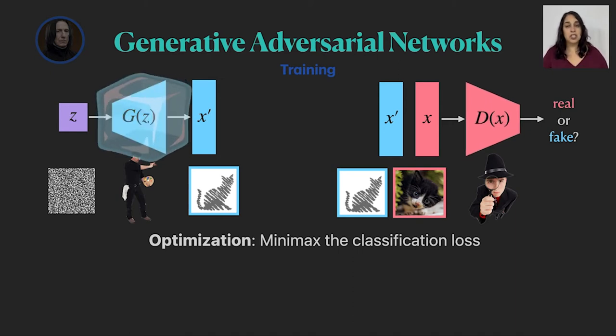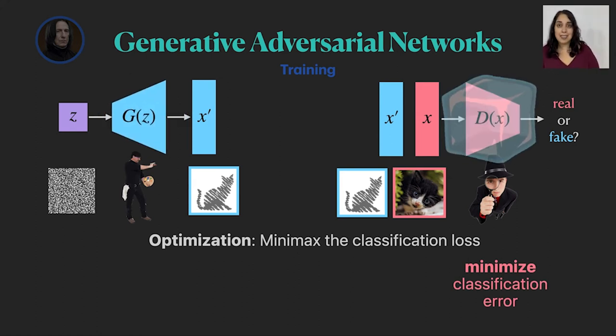When D is being trained, G is being fixed and we minimize the classification error. And when G is being trained, D is being fixed and we maximize the classification error.